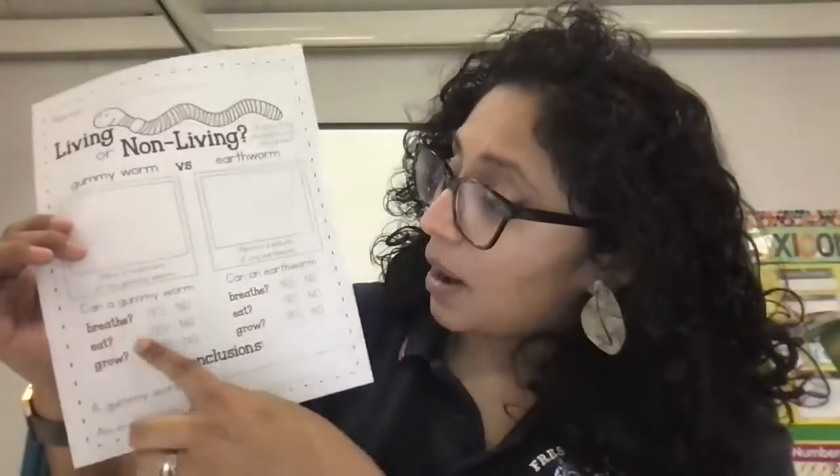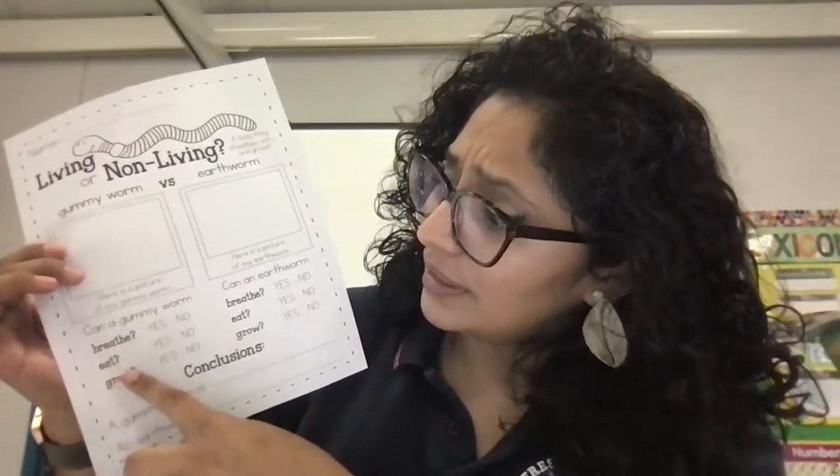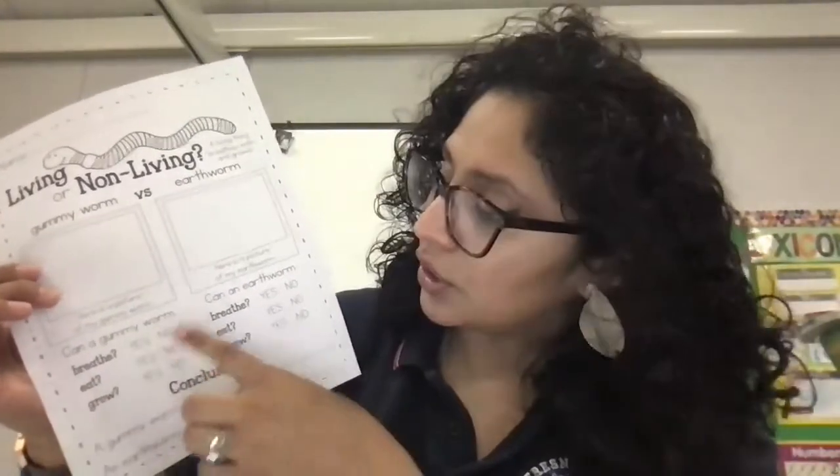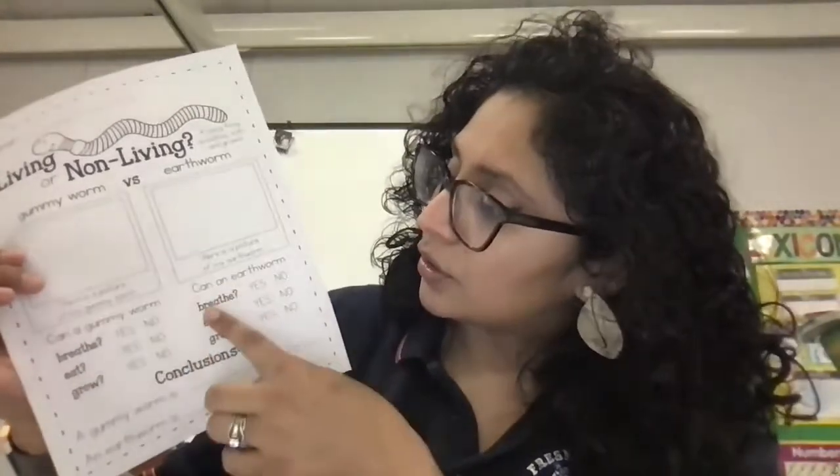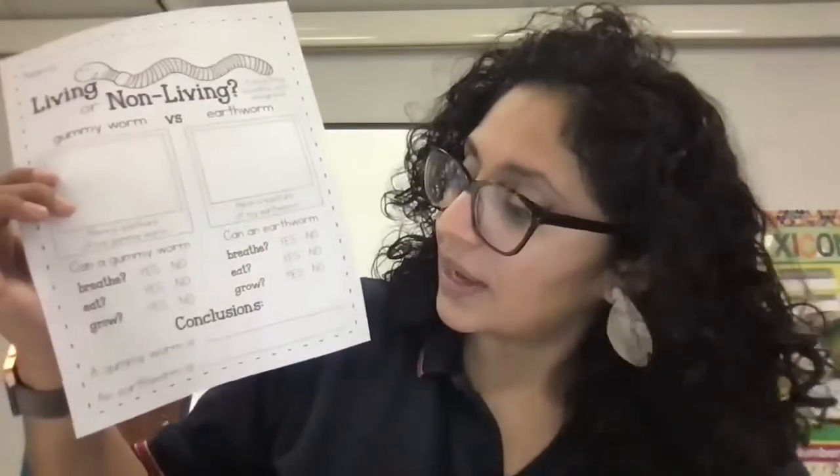When you're done watching these videos, you finish off the questions at the bottom. Can a gummy worm breathe, eat, grow? And then you're either going to circle yes or no. Can an earthworm breathe, eat, or grow? And then you're going to circle yes or no.